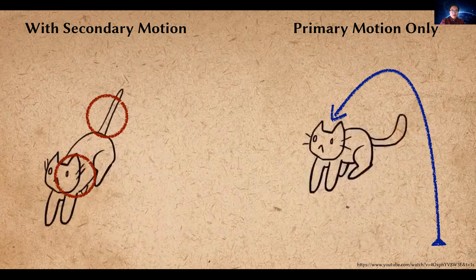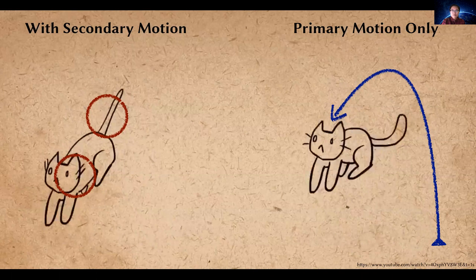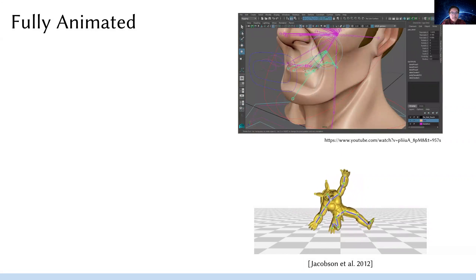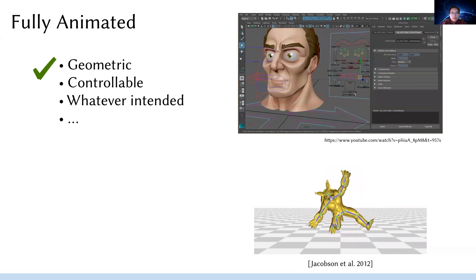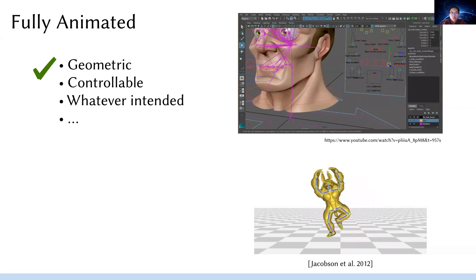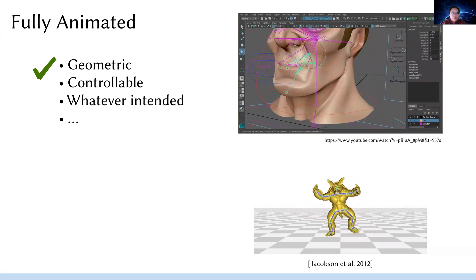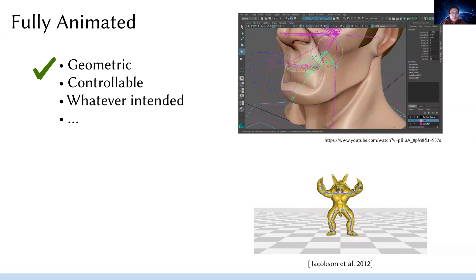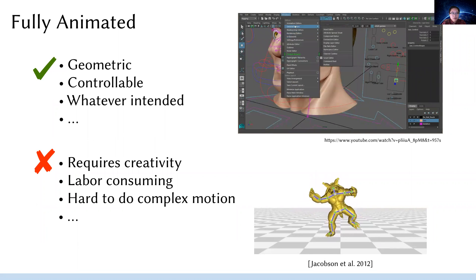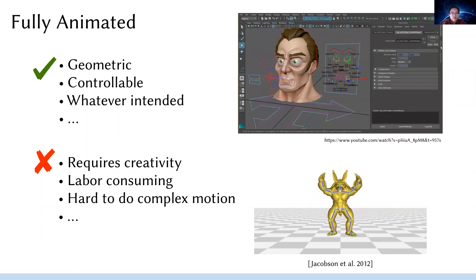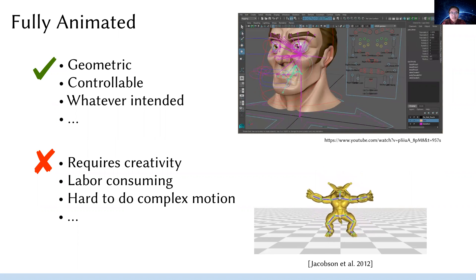But now the question becomes, given the primary motion, how could we actually achieve the secondary motion effectively? People want control over the animation, so they might make it fully animated. This is a good idea since the rigs are usually purely geometric and the animator could do whatever they want within the design space. However, this is also not great since it requires a fair amount of creativity and could also be labor and time consuming. Moreover, it would be extra difficult if the goal is to achieve very complex motion.